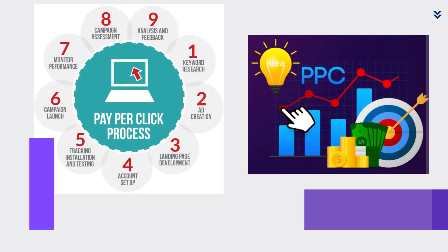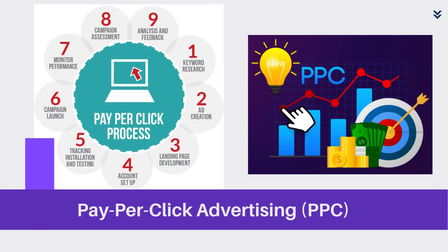Pay-per-click, or PPC, advertising is a model where advertisers pay a fee each time one of their ads is clicked. It's a way of buying visits to your site rather than earning them organically. PPC ads can appear on search engines like Google or on social media platforms like Facebook and LinkedIn. The key to successful PPC advertising is to target the right audience with relevant keywords and engaging ad copy, ensuring your ads are seen by people most likely to be interested in your products and services.